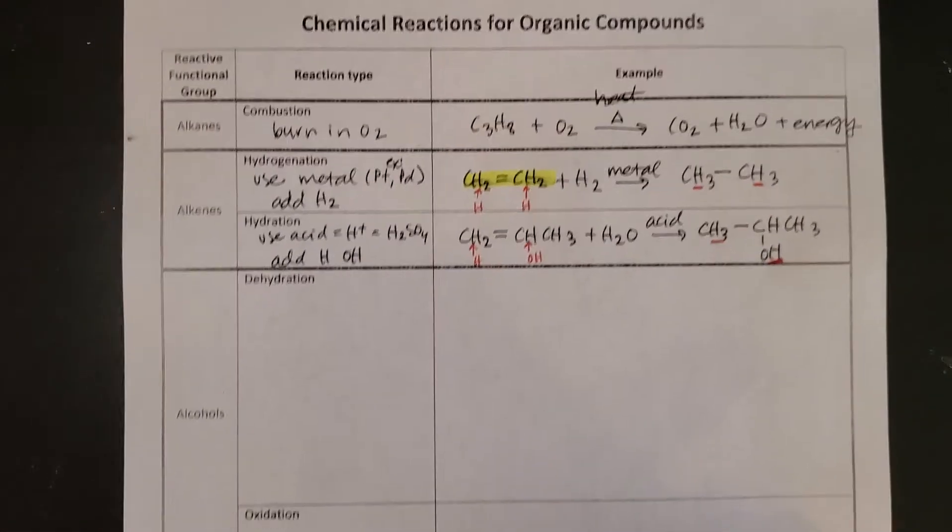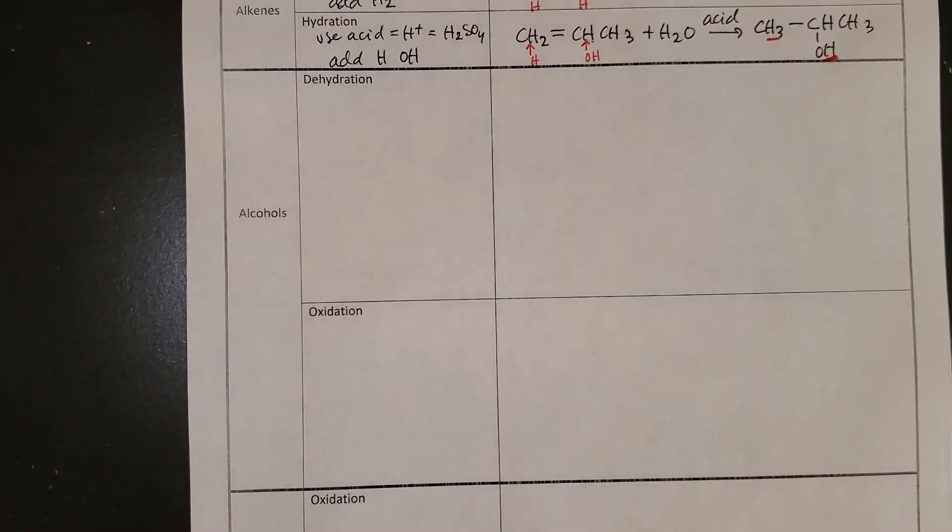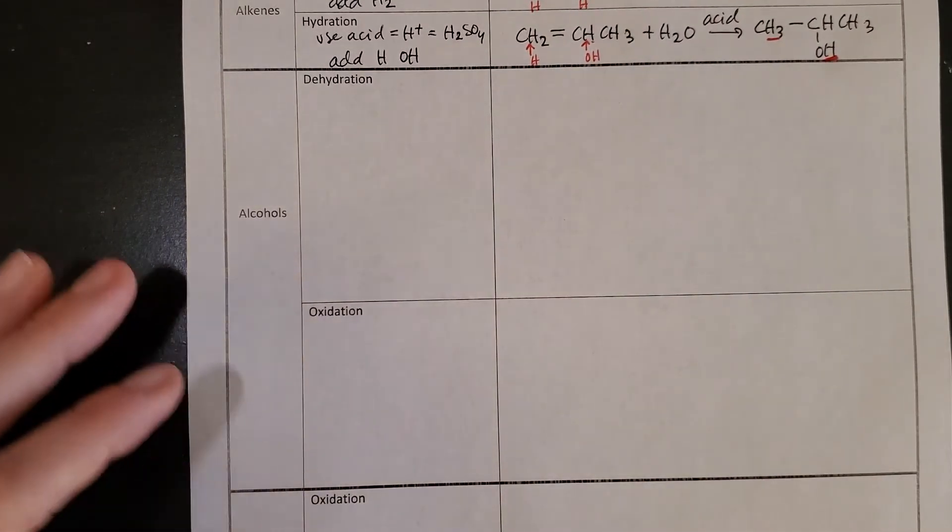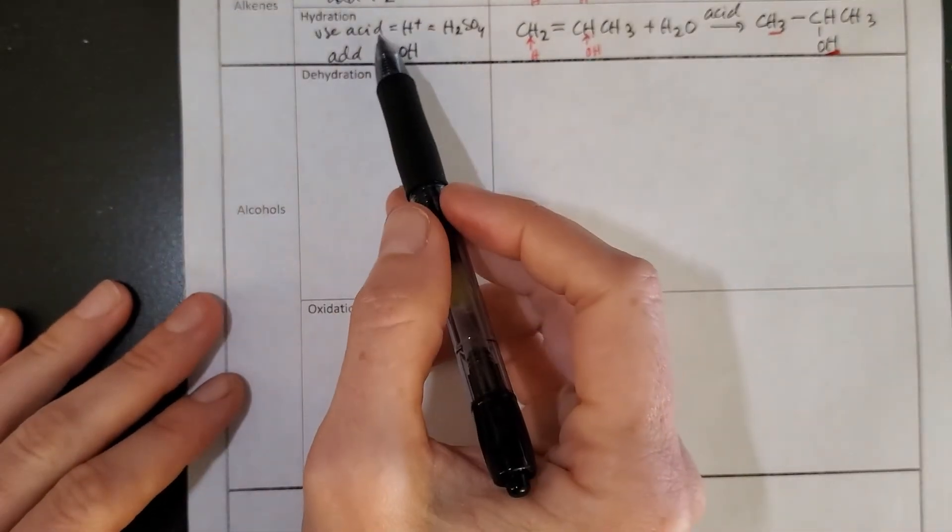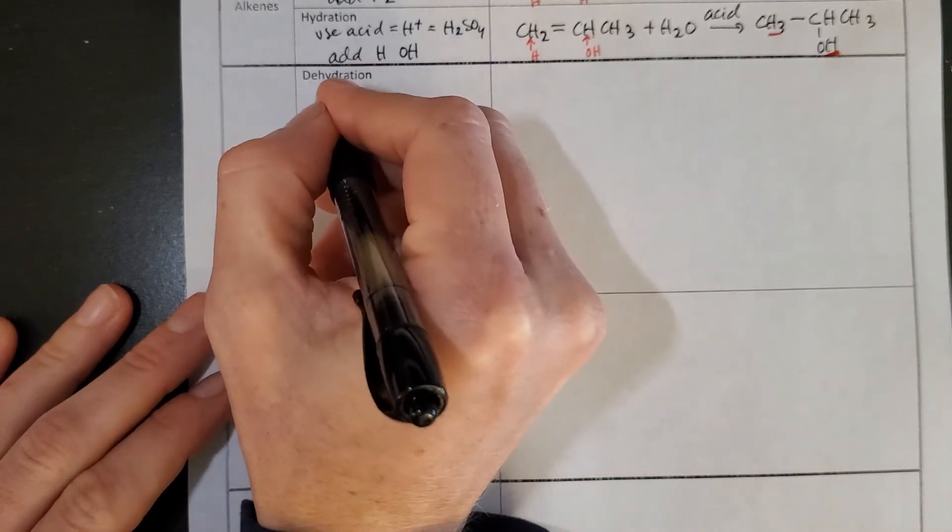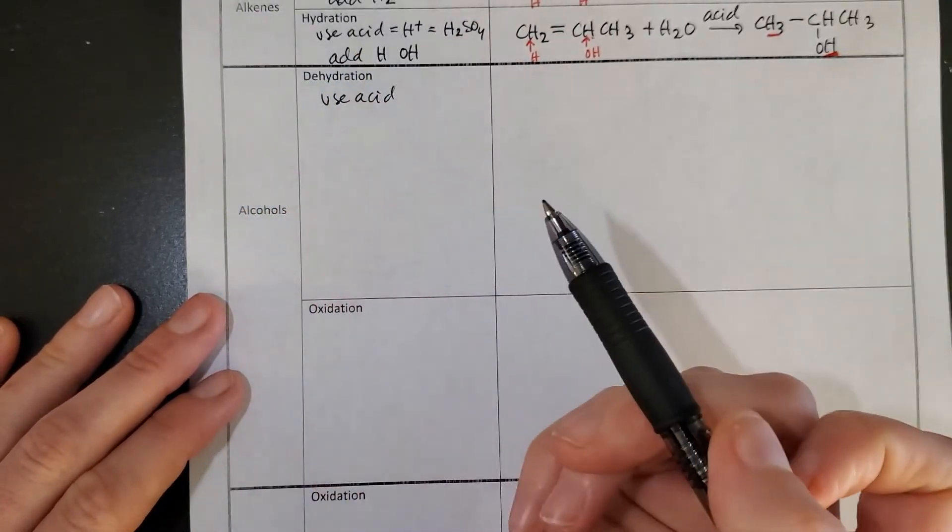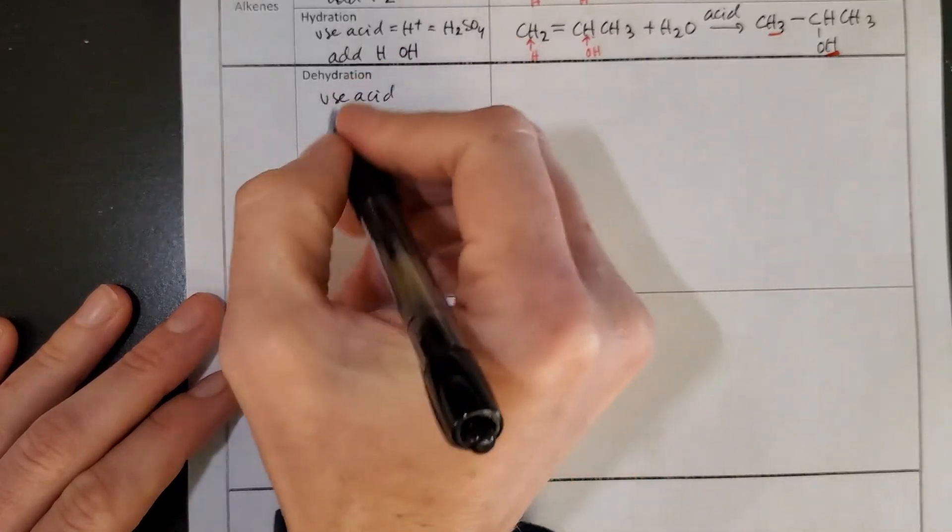Next up we have a whole bunch of reactions for alcohols. We have both dehydration and oxidation. Dehydration is going to be exactly the opposite of our hydration reactions. Dehydration reactions are also going to use acid, the same H+ or H2SO4 that we saw above, except for D is our prefix now, so we're going to lose H and OH or remove H and OH.